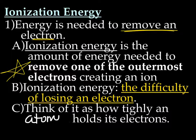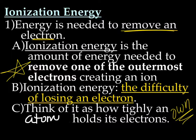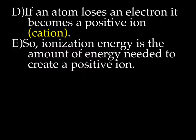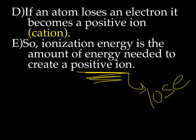Think of ionization energy as how tightly an atom holds its own electrons. The tighter an atom is holding its electrons, the greater the amount of energy needed to remove it — so there's greater ionization energy. The looser an atom is holding an electron, the less energy needed to pull it away. If an atom loses an electron, it becomes a positive ion known as a cation. So ionization energy is the amount of energy needed to create a positive ion, and to get a positive ion you are losing an electron.